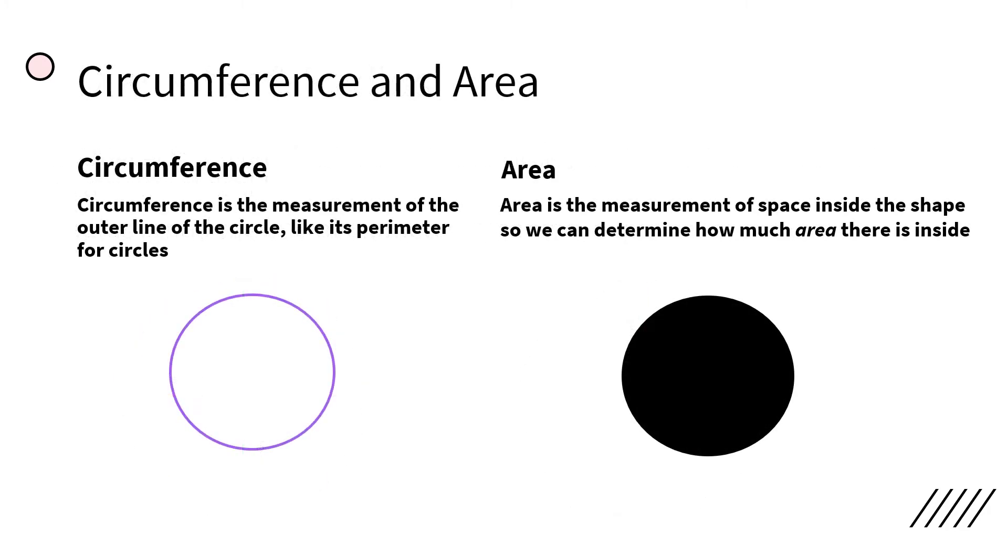Circumference and Area. Circumference is the measurement of the outer line of the circle, like its perimeter for circles.